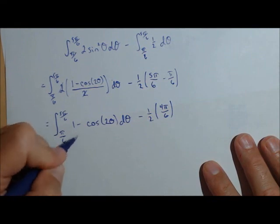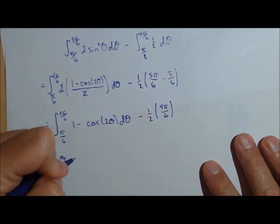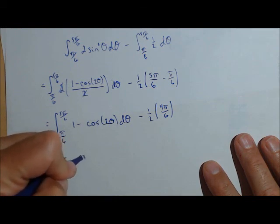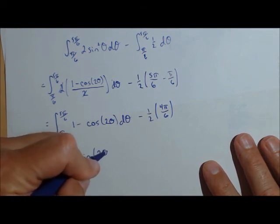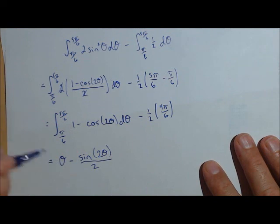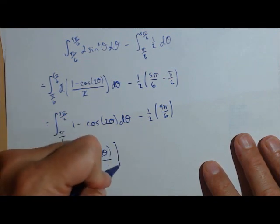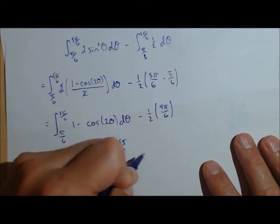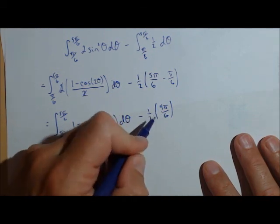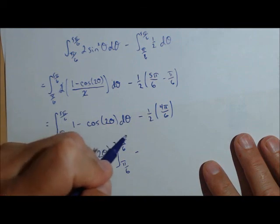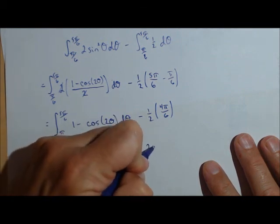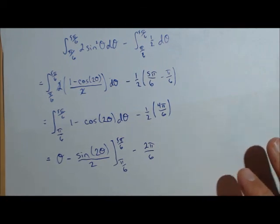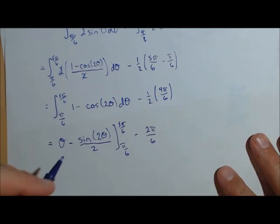Alright, anti-derivative here, anti-derivative of 1 is just theta, anti-derivative of cosine is sine, so minus sine of 2 theta, now because it's 2 theta, we'll have to divide by a 2 from pi over 6 to 5 pi over 6 minus 1 half. Pi over 6 is going to be 2 pi over 6. Now we could reduce that, but I'm going to leave it as pi over 6 for some combining here in the latter step.